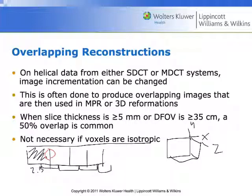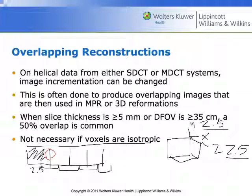In general, overlapping reconstructions are not necessary if the voxels are isotropic — if the slice thickness is 2.5 mm and we also only moved 2.5 mm (a pitch of 1), then we don't need an overlapping reconstruction. But if we're increasing the pitch beyond 1, we may need to produce overlapping reconstructions. Another case where overlapping is not necessary is if the slice thickness is very thin — 0.5 mm or less with a field of view less than 25 cm — overlapping reconstructions generally are not worth the inconvenience of storing the larger dataset, as there's not going to be anything really added to the information.